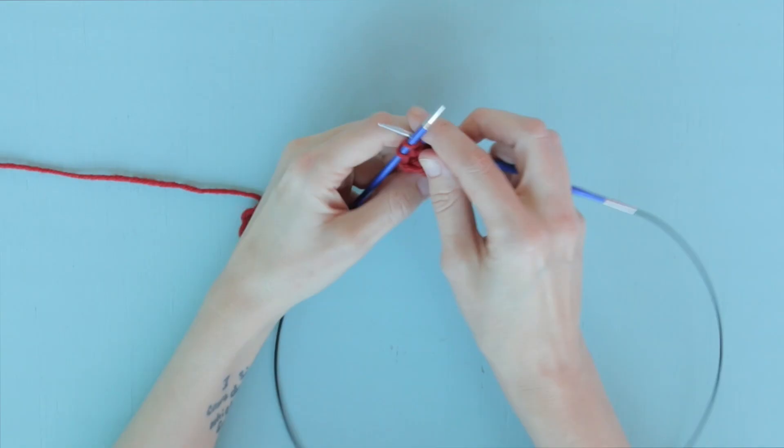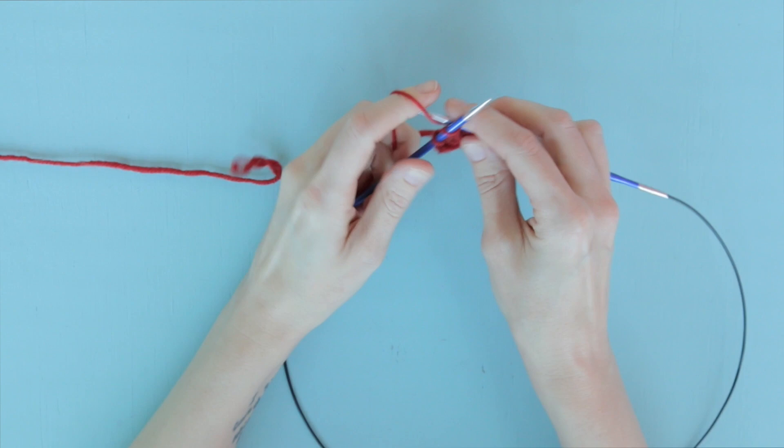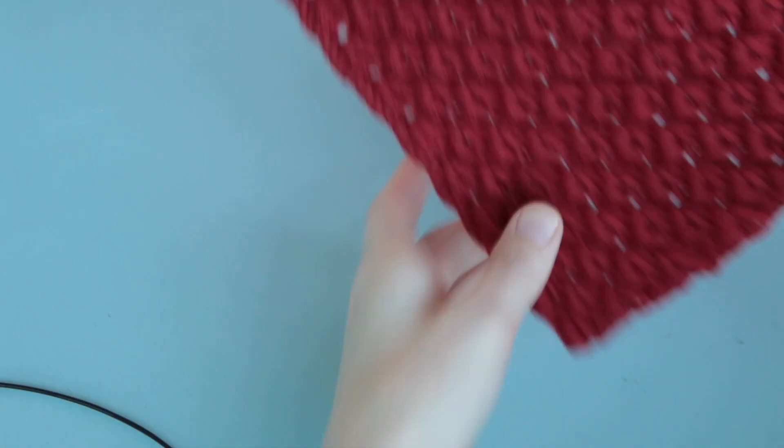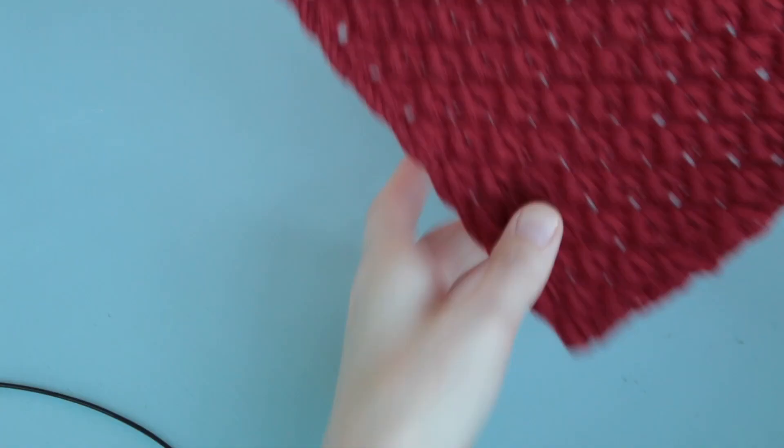When you have finished working all the way across row four and only two stitches remain, all you gotta do is knit two. And that, my friends, is how to work the anemone stitch, which you can see much better in this much larger swatch.